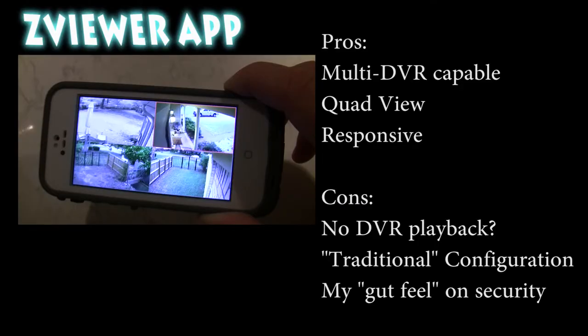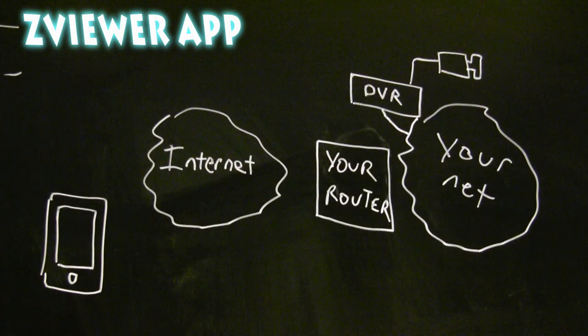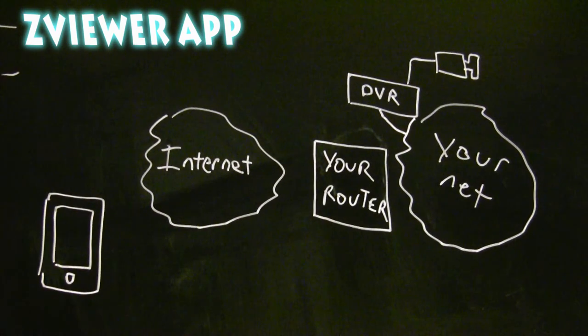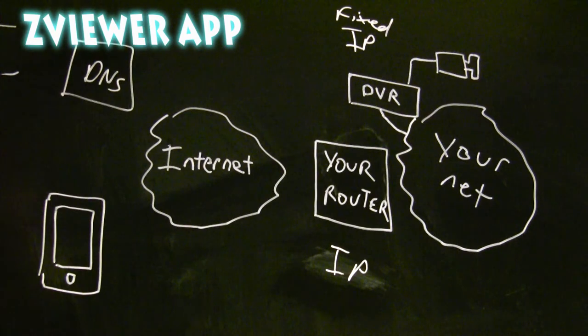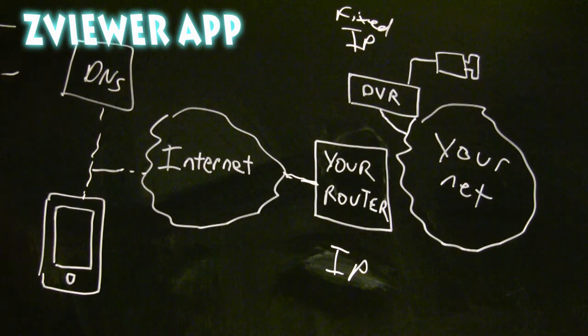I couldn't find a way to play back the DVR footage through this app, and the configuration is very traditional. Configuration may be too much for most people. You've got to know how to assign a fixed IP. You've got to get familiar with DNS and the internet and punch a hole in the router.